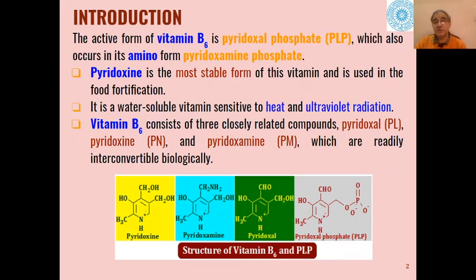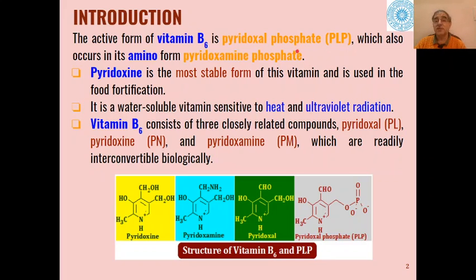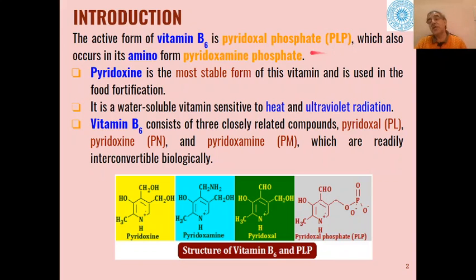Pyridoxal phosphate is an active form of vitamin B6 and it also occurs in its amino form which is called pyridoxamine phosphate. In most of the enzymatic reactions, the form which is useful is PLP — pyridoxal phosphate — which acts as co-enzyme for different types of biosynthetic reactions.